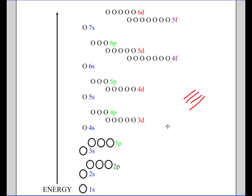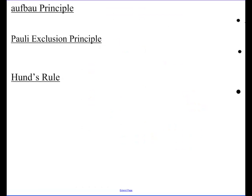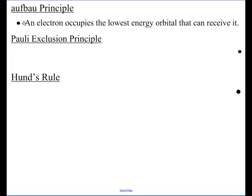Let's figure out how the electrons are going to fill up these orbitals. I like to think of this as the electron motel — imagine all these circles are represented by orbitals, and electrons fill them depending on how much energy they have. There are a few guiding principles to help determine where electrons go. The first one is the Aufbau principle, which states that an electron occupies the lowest energy orbital that can receive it.